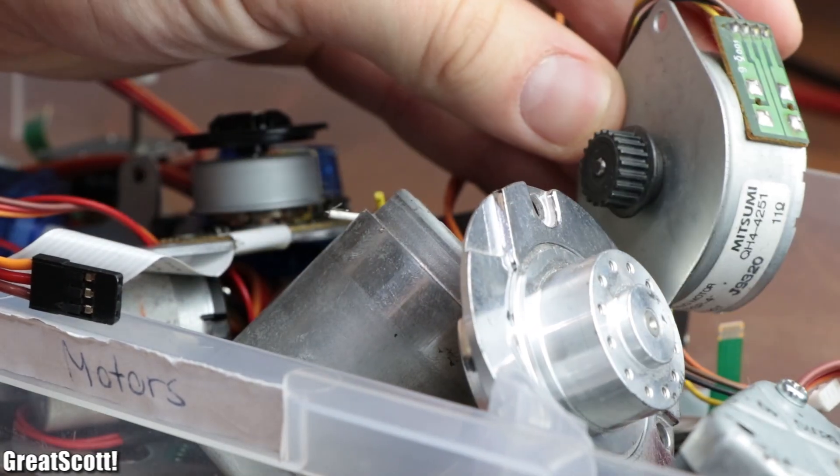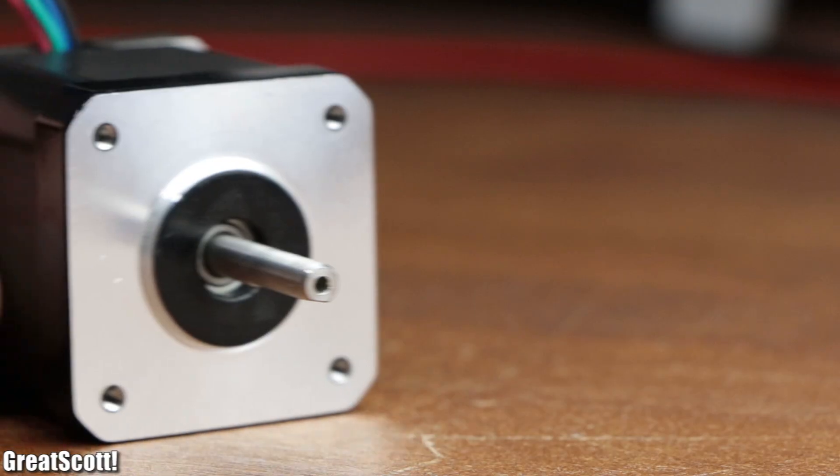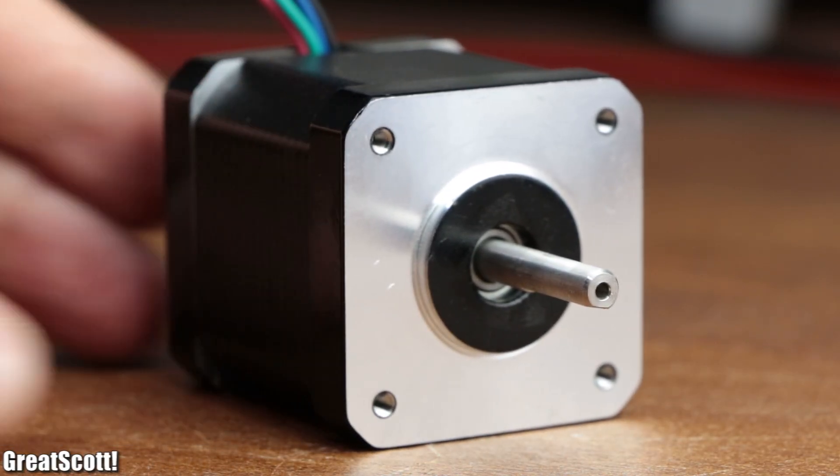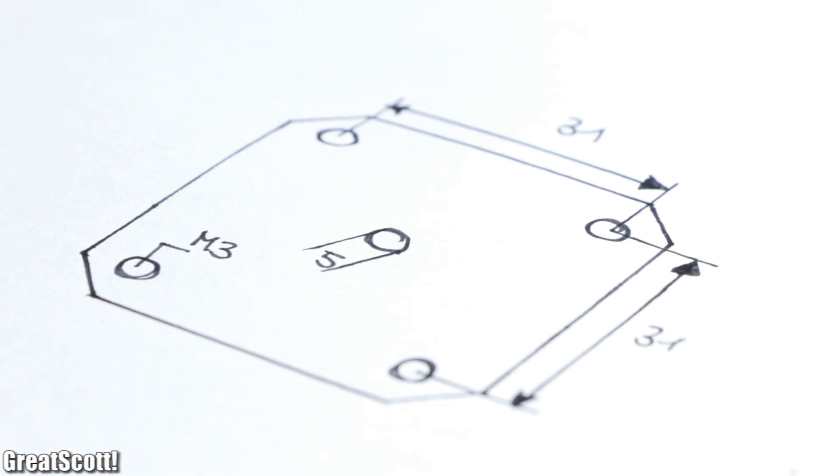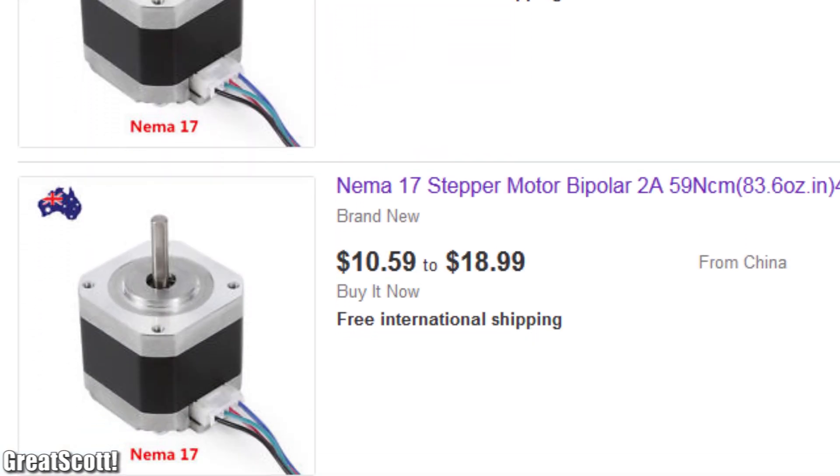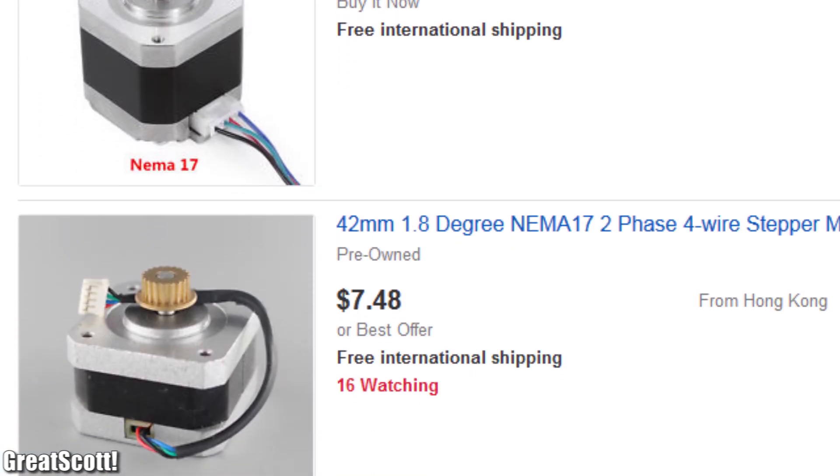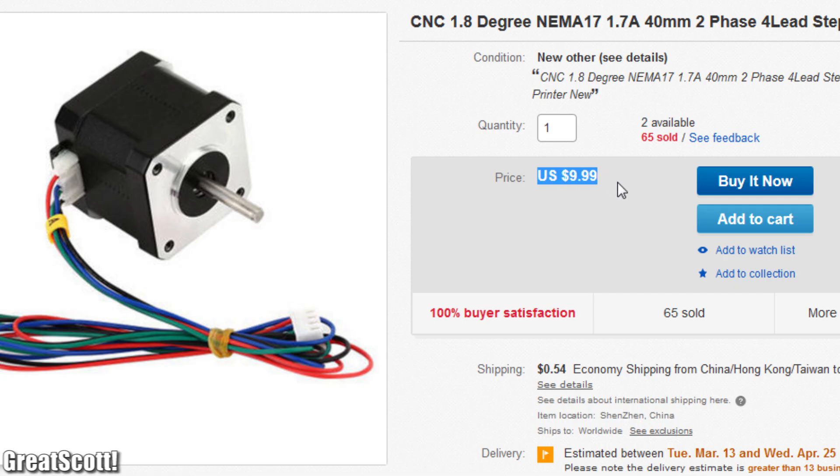So the next question is which one should we buy? I went with the NEMA 17 stepper motor because it has a standardized faceplate with known dimensions, they're very easy to get a hold on, and most importantly they're relatively cheap, around $10 per piece.